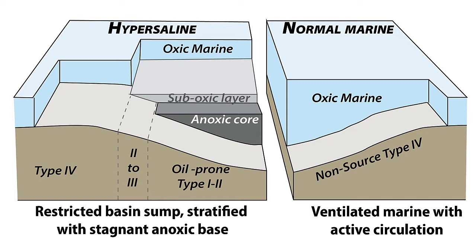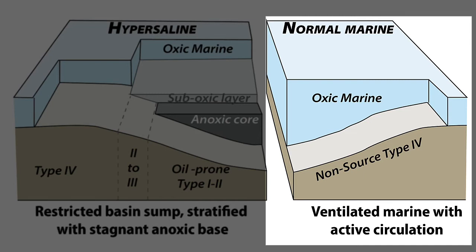In the hypersaline setting, we tend to see schizohaline upper water, so this feast and famine pulsing in the upper water mass feeds pulses of sediment into that anoxic bottom below the anoxic brine layer. We find oil-prone type 1 and type 2 systems being preserved in the kerogens. Under normal marine situations, we tend to find significant and efficient bioturbation and consumption of organic material, and so we only get oxidized, non-source type 4 organic matter accumulating on the floor.